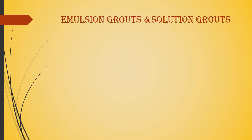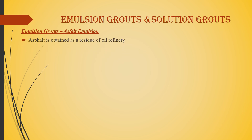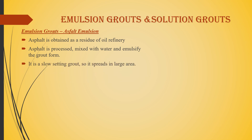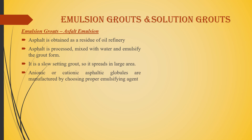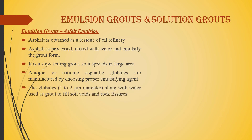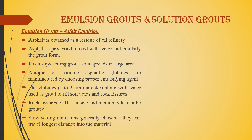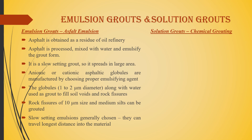Emulsion grouts use asphalt, which is obtained as a residue from oil refinery processing, mixed with water and emulsified to form the grout. It is a slow-setting grout, so it spreads over a large area. Anionic or cationic asphaltic globules of one to two micrometers diameter, along with water, are used to fill soil voids and rock fissures of about 10 micrometers in size. Slow-setting emulsions are generally chosen as they can travel the longest distance into the material.